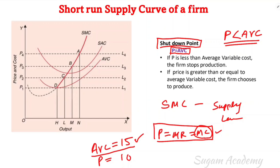At least the variable cost must be covered — raw material and other variable inputs. If the price cannot even cover variable costs, then the firm will stop production. So here it will not produce. This is the shutdown point: at least price must be greater than or equal to average variable cost.